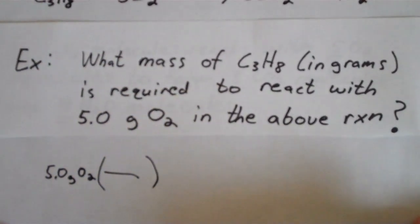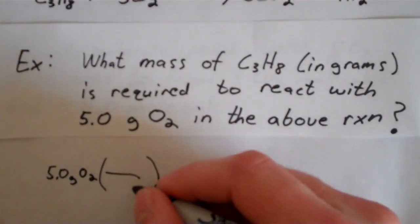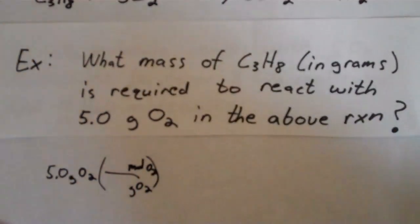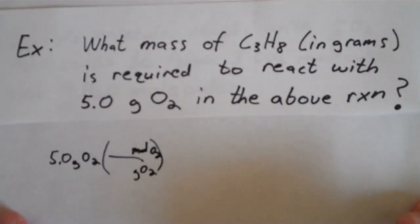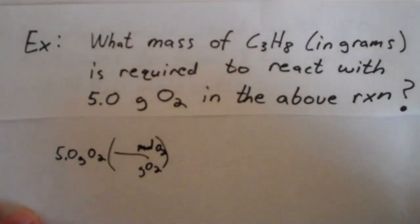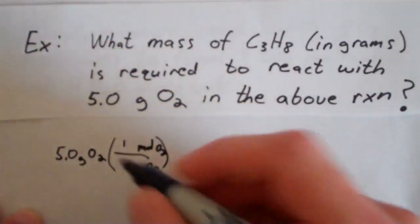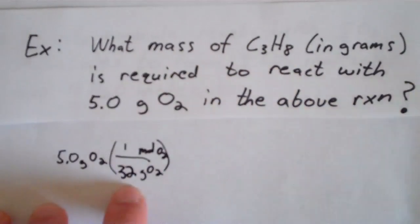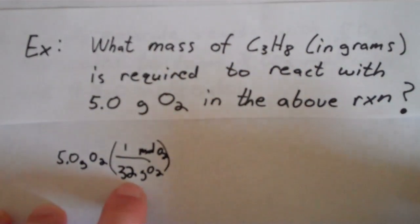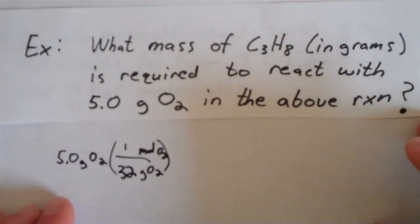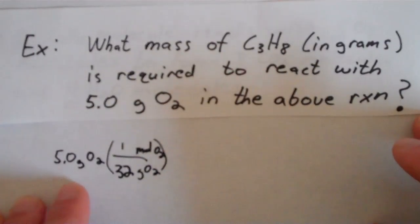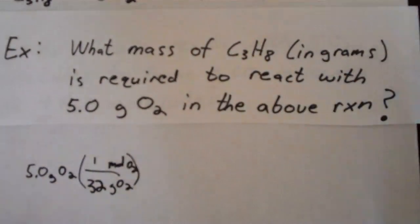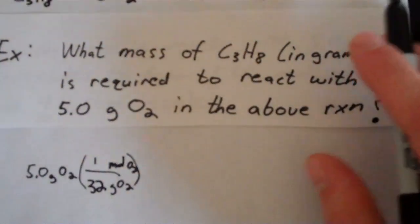So we're going to convert this to moles. We're going to put grams of O2 on the bottom. We're going to put moles of O2 on the top. And for every 1 mole of O2, there's about 32 grams. There's a couple of decimal places that I'm leaving out here, but for simplicity, it's 32. So we've just converted the mass of oxygen into moles. And we are ever closer to finding out the mass of propane required to react with it.